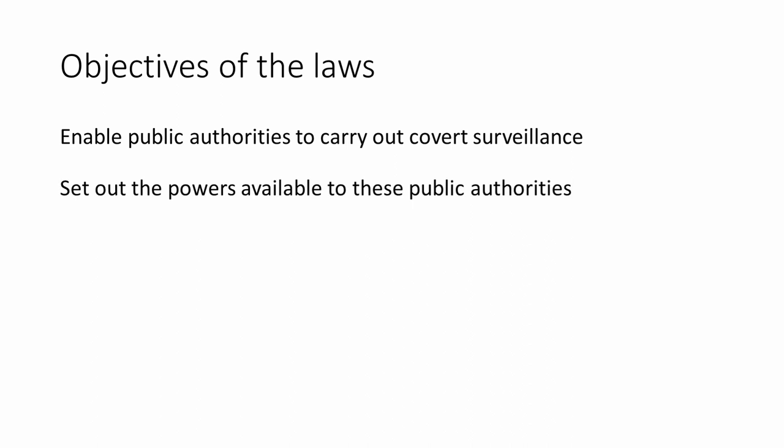These laws set out the powers available to public authorities. There have to be limits on what public authorities can do, and there has to be some regard for people's privacy. After all, even the organisations empowered to govern and protect us are fallible, and they are certainly not above the law. These laws provide transparency — they are spelt out in detail and published so that people can understand how they work and be aware of their rights. It also means that these laws can be scrutinised and challenged if necessary.